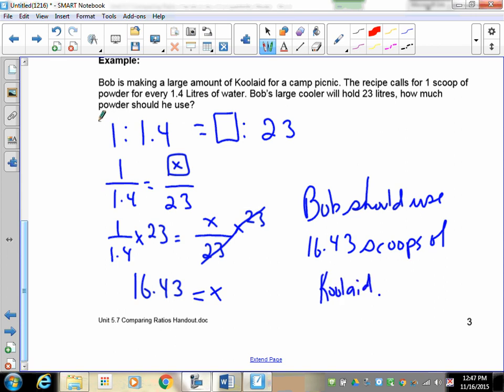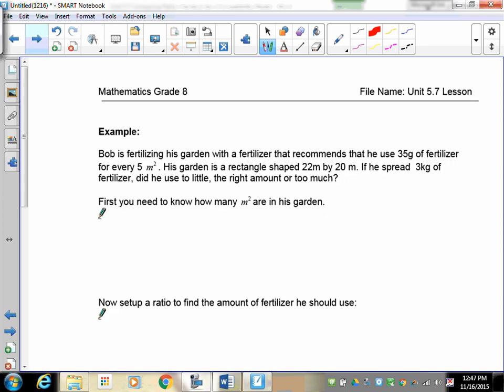All right, let's go to the next question. Here's another one, a little bit different. Again, we're trying to get you the introduction to all the different types of questions you're going to encounter on your assignment. So Bob is fertilizing his garden with fertilizer that recommends that he should use 35 grams of fertilizer for every 5 meters squared. His garden is a rectangle, 22 by 20.